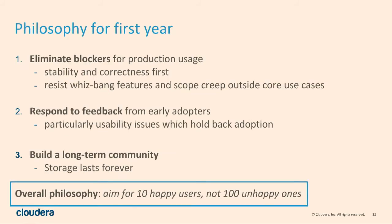During that first year and through our 1.0 release, the goal was to do three things. First, eliminate blocker bugs and work on stability and correctness — as a storage system, if we have great features but sometimes crash and lose your data, you're not going to touch it. We'd rather have two features that work really well than ten that fall apart when you try to use them. Second, get early feedback from early tech adopters — companies like Xiaomi in China and a couple in the US were taking this early software, building it, deploying it, and giving us feedback. Third, building a long-term community — we moved to the Apache Foundation and wanted contributors from around the world.